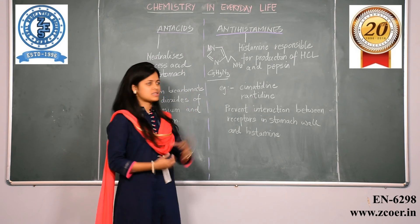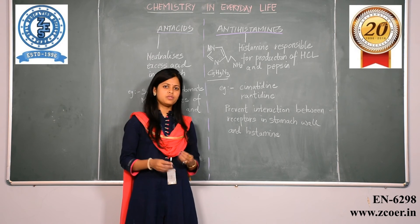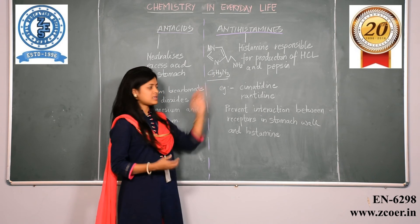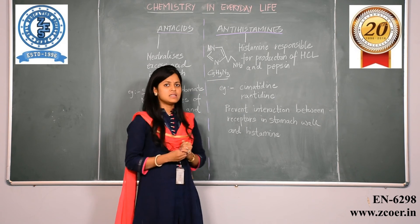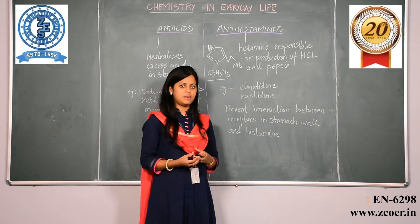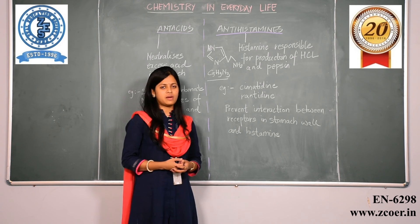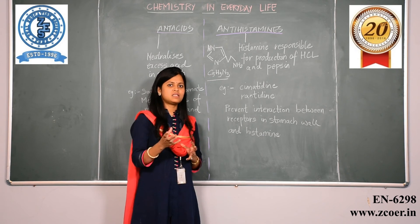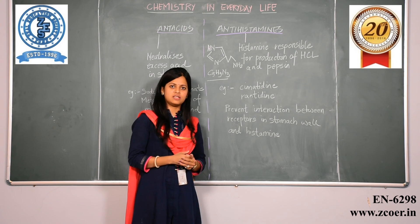Let us look at the next category which is antihistamines. This is also related to stomach ailments. The component which is responsible for producing HCl and pepsin is histamine. The chemical composition of histamine is C5H9N3. Histamine interacts with the stomach walls and produces HCl and pepsin. If histamine does not react with the stomach wall, HCl production will be automatically reduced, and that is exactly what antihistamines do. These drugs prevent histamine and the stomach walls from interacting with each other, hence reducing acid production in the stomach.